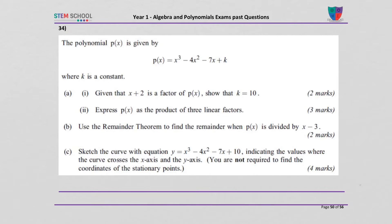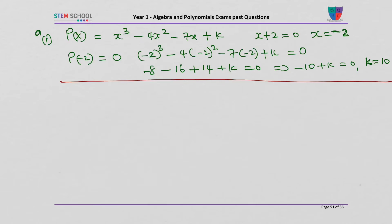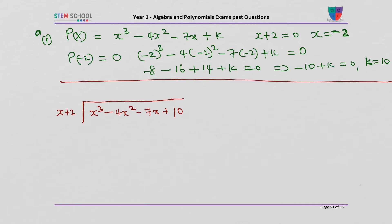The second part is to express P of x as the product of three linear factors. We know that one of the factors is x plus 2. To find the other factors, we need to divide P of x by x plus 2. So that would be x cubed minus 4x squared minus 7x plus 10. What can we multiply x by to get x cubed? x squared.